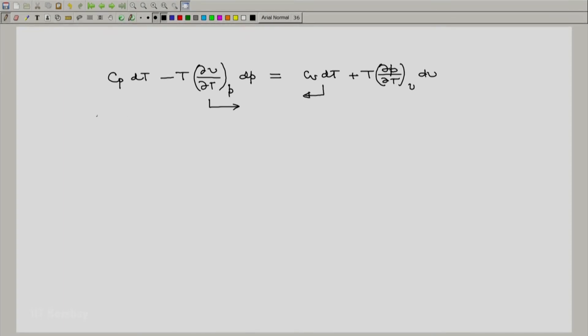Since dT is common on the left hand side now we can write CP minus CV into dT equal to T partial of V with respect to T at constant P dP plus T partial of P with respect to T at constant V dV.